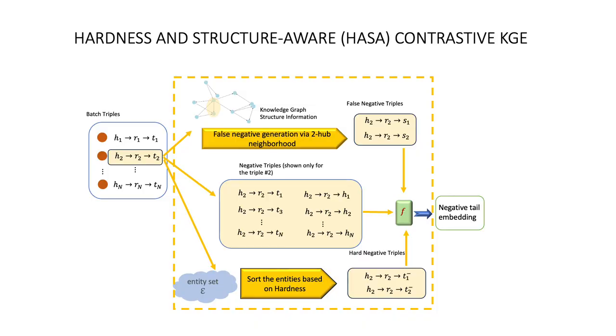So we propose the Hardness and Structure-Aware contrastive knowledge graph embedding method to both consider the hard and false negatives when generating negative triples, using the graph structure to filter false negative triples to get rid of their effect.